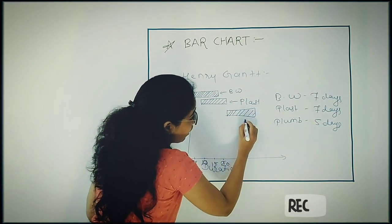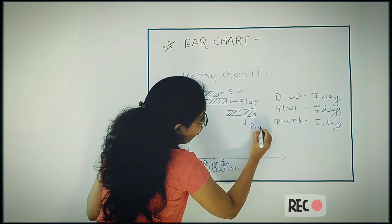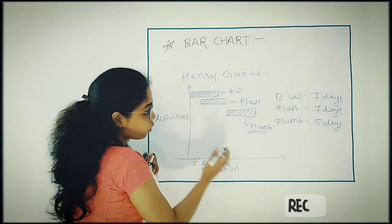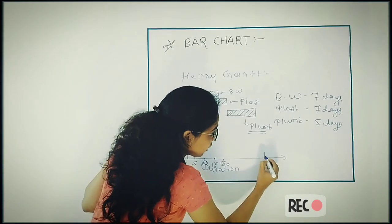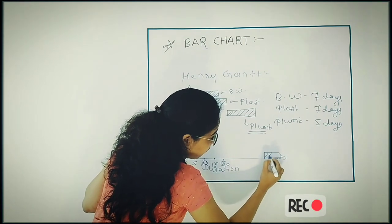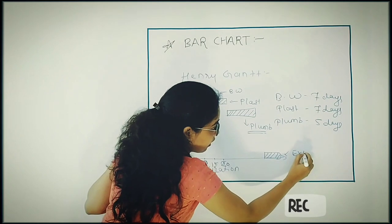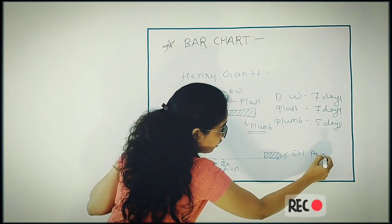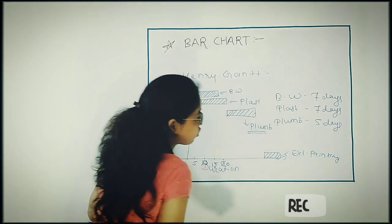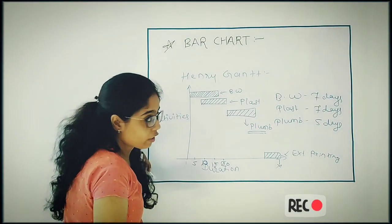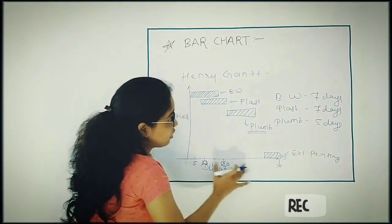In this way, you have to show all the activities into the chart. And if you suppose the last activity is your external painting, okay, this is your external painting. So here you will come to know what is the total duration required to complete all those activities.